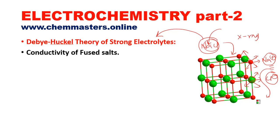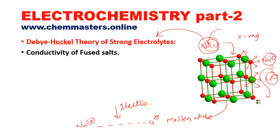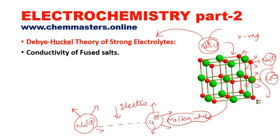Whenever this NaCl crystal is melted — that means if we observe molten NaCl — the Na⁺ and Cl⁻ move far away from each other. That means there is minimization of electrostatic interactions between Na⁺ and Cl⁻ ions, and these ions are free to move around. The mobilities of ions increase in the molten form of NaCl, and that's why they contribute to conductance.